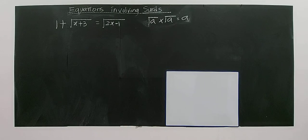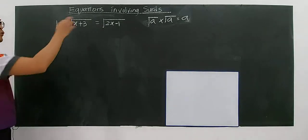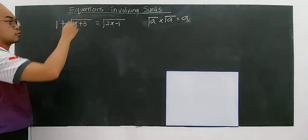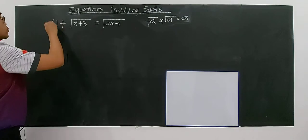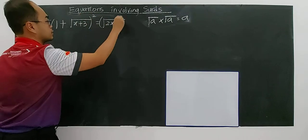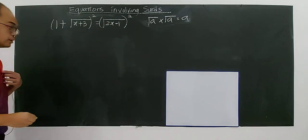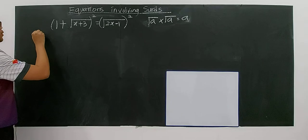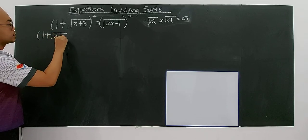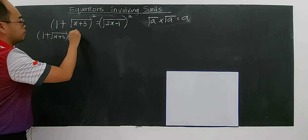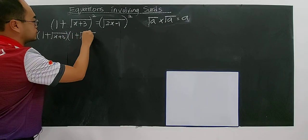Alright, let's look at these examples. In the previous video you learned that squaring both sides will help you to solve this type of equation involving surds. So this question is also the same — you're going to use squaring both sides. So I'm going to square both sides. I'm going to square this: 1 plus square root of x plus 3.